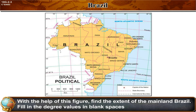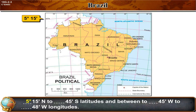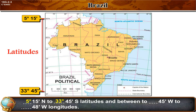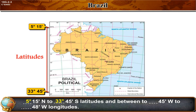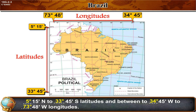With the help of this figure, find the extent of mainland Brazil and fill in the degree values: 5 degrees 15 minutes north to 33 degrees 45 minutes south latitudes, and between 34 degrees 45 minutes west to 73 degrees 48 minutes west longitude.